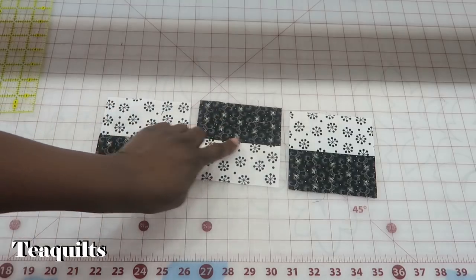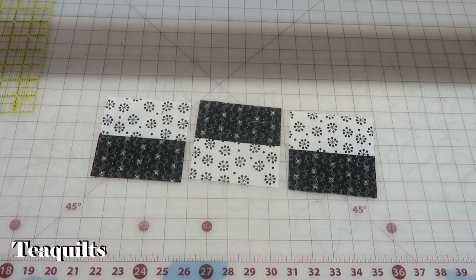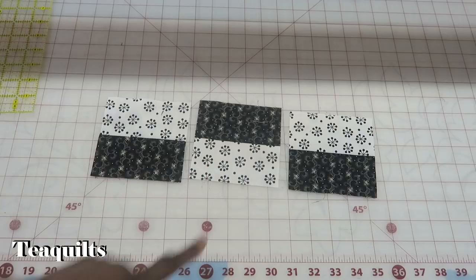And now we're going to sew these back together. We just want to make sure that we alternate that one in the center. I will do that and come right back.